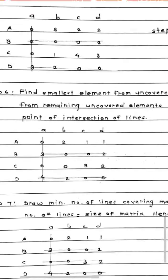So this is the next matrix which you have got after covering the uncovered elements, finding out the minimum from the uncovered elements, subtracting it from the remaining uncovered elements and adding that element at the point of intersection.